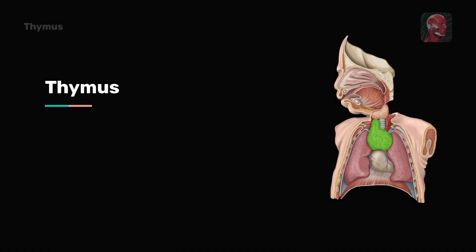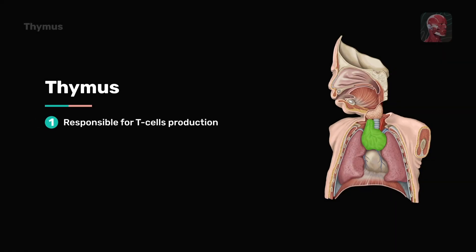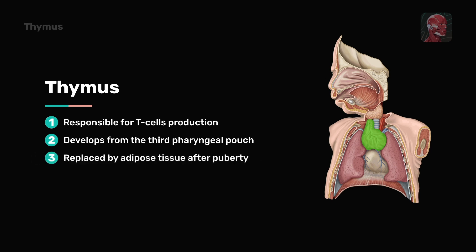Embryologically, the thymus is derived from the third pharyngeal pouch. The thymus is most active during childhood, but after puberty, it gradually decreases in size and is replaced by adipose tissue.